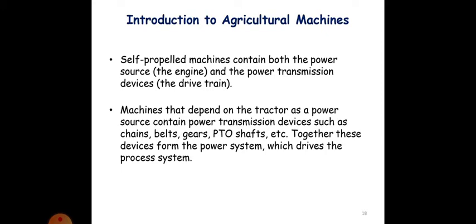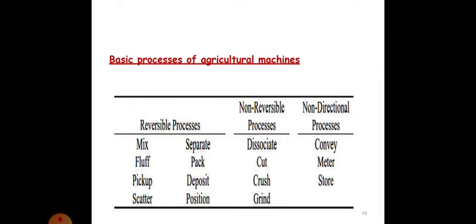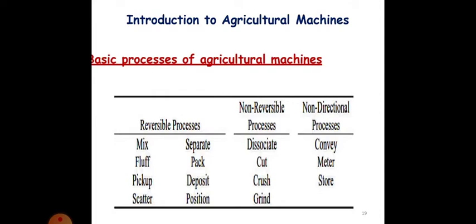Basic processes of agricultural machines. The reversible process includes mixing, separating, fluff, pack, pickup, deposit, scatter, and position. The non-reversible process includes dissociate, cut, crush, and grind. And non-directional process includes convey, meter, and store.